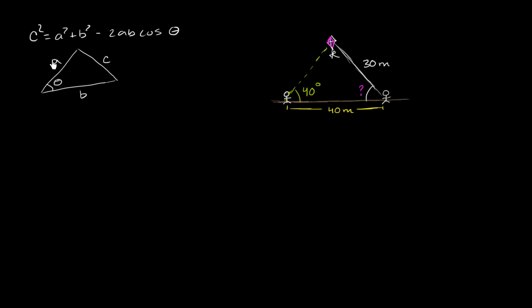So for example, if I knew two sides and the angle in between them, I could figure out the third side. Or if I know all three sides, then I could figure out this angle. But that's not the situation that we have over here.